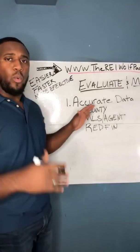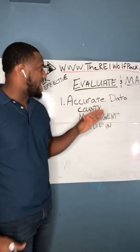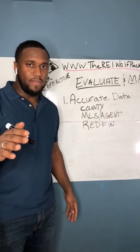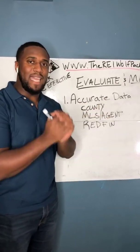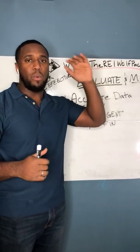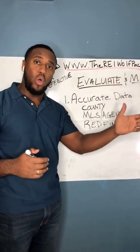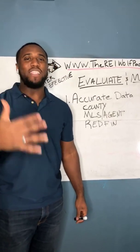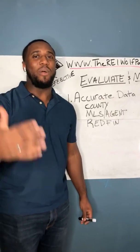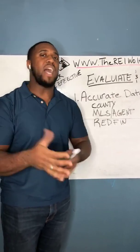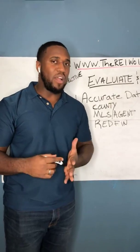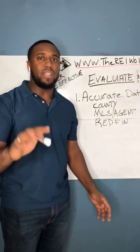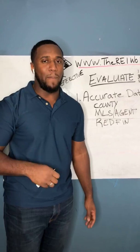So the first thing when you're getting ready to evaluate a property is making sure that your data source — the source that's telling you the price of homes that were recently sold — is accurate. This is why I say you do not want to use Zillow.com. It's not completely accurate. They have not figured out the process or the system yet. It's great for finding properties, not the best for evaluating properties.